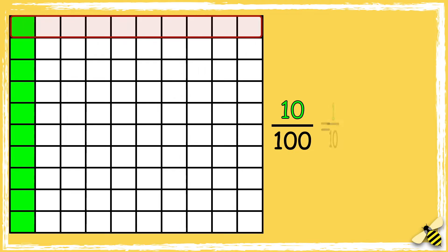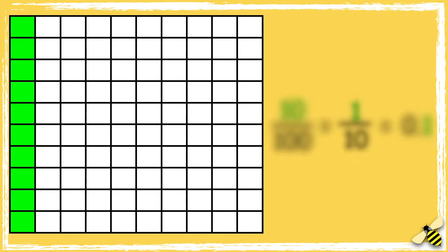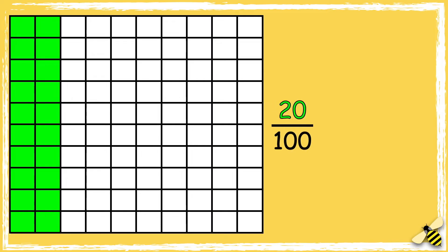So ten hundredths is equal to one tenth. As a decimal number it's zero point one. Now we have twenty hundredths. Each row shows two tenths, so twenty hundredths is equal to two tenths. As a decimal this is zero point two.